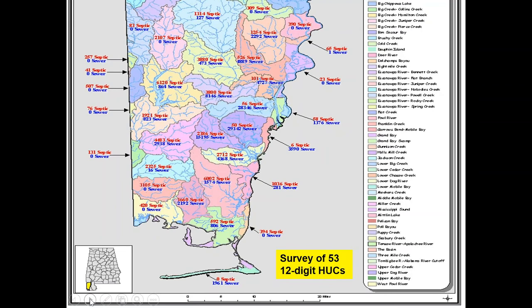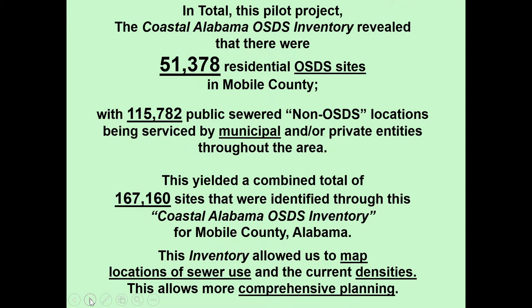We surveyed all 53 drainage area HUCs within Mobile County and tracked the number of septic tank users as well as the number of public utility users in each drainage area. We had geo-rectified maps and good mapping tools. We found 51,000 septic tanks within Mobile County being used, and over 115,000 residences on public sewer. These maps allowed us to work with utilities, cities, and counties to provide good maps and density layers so they could do comprehensive planning.